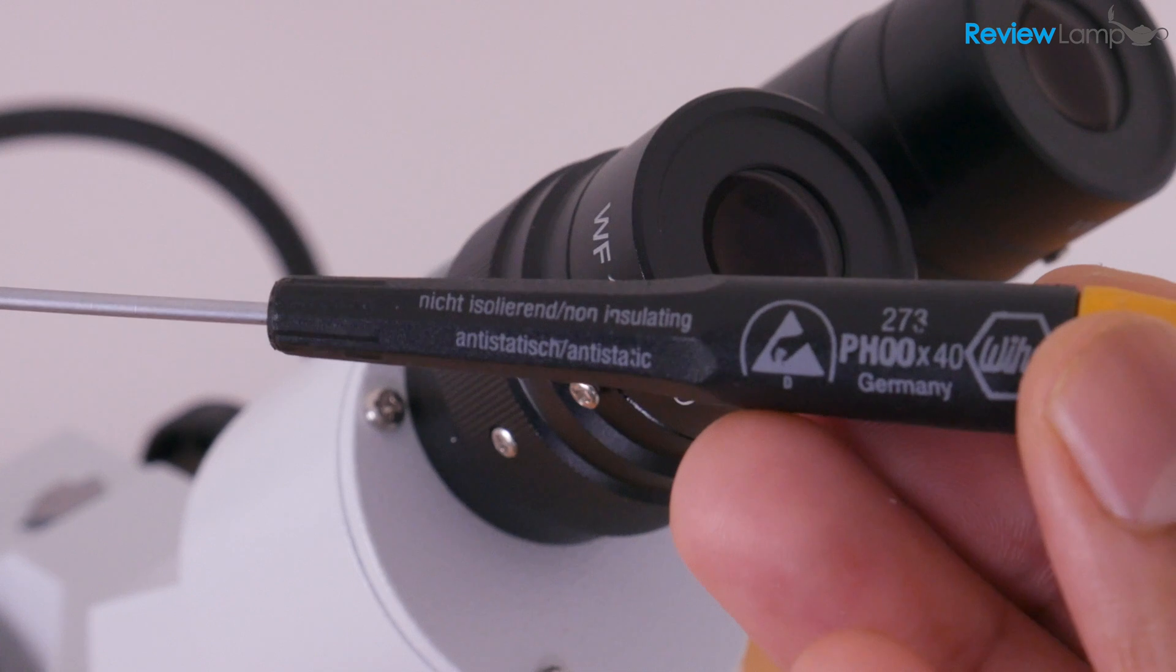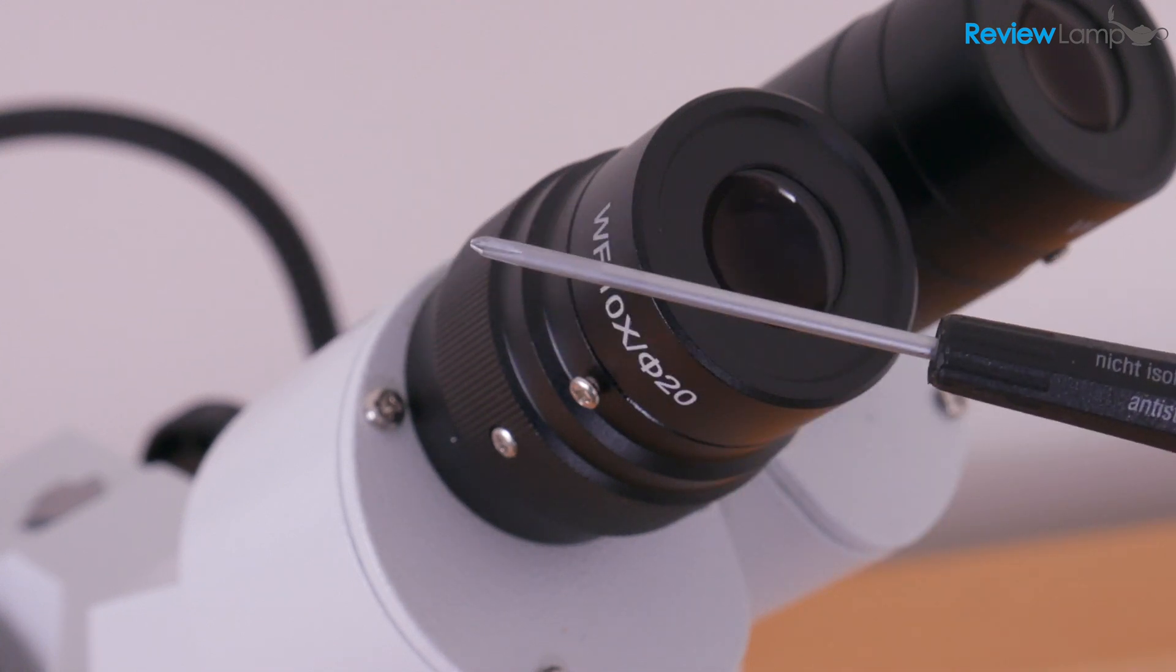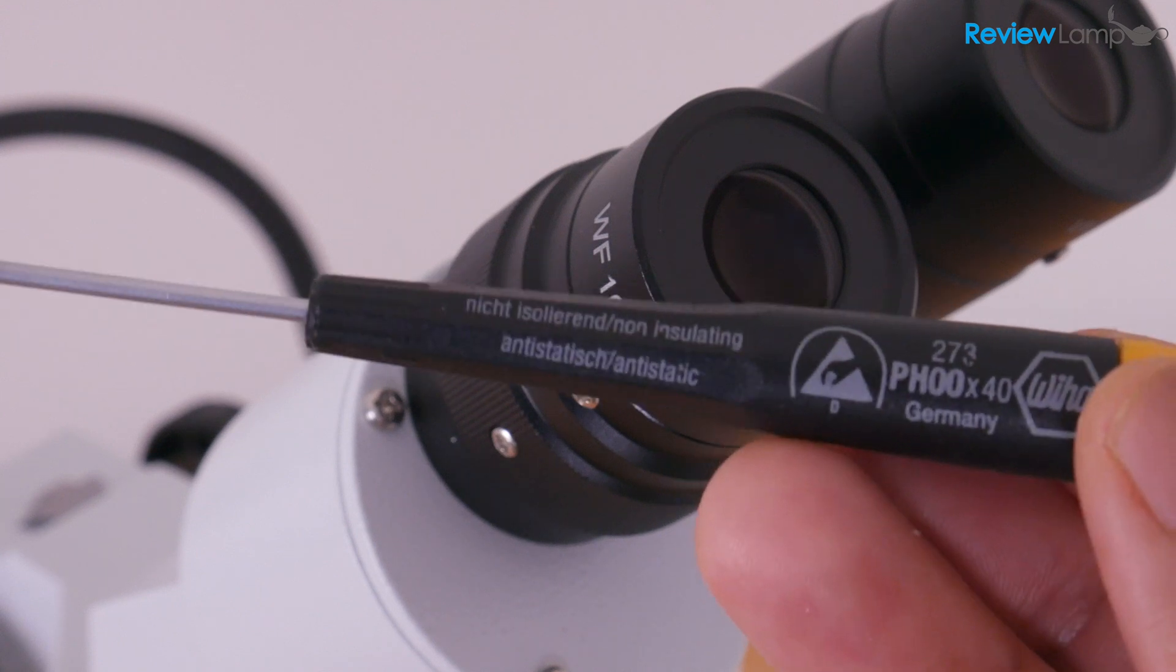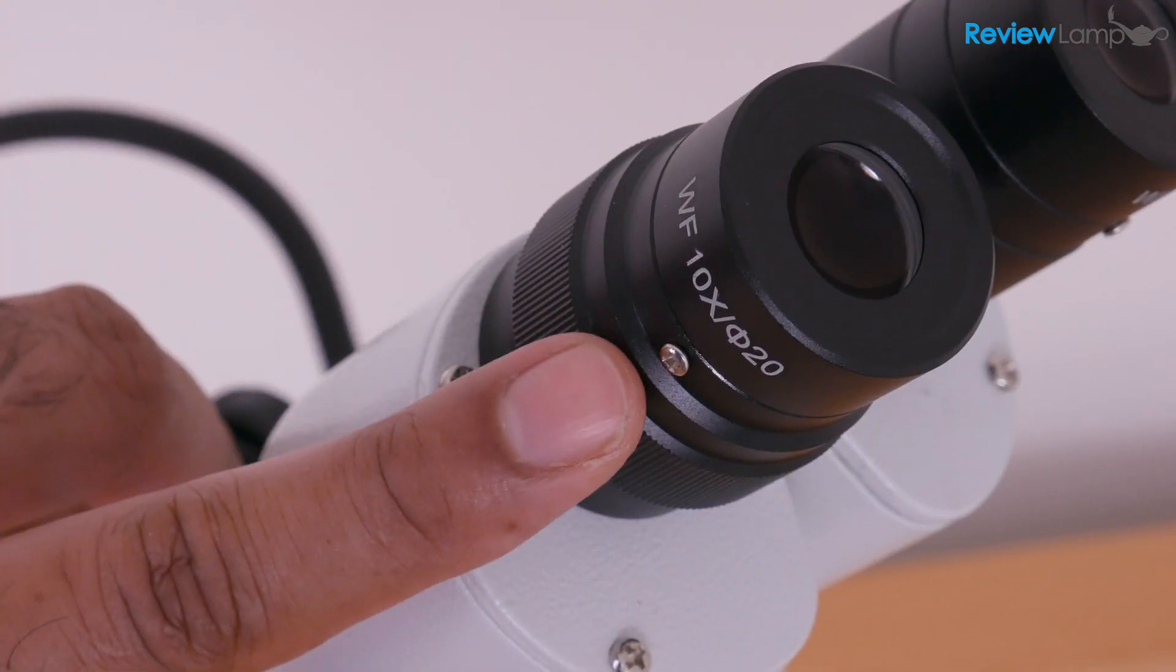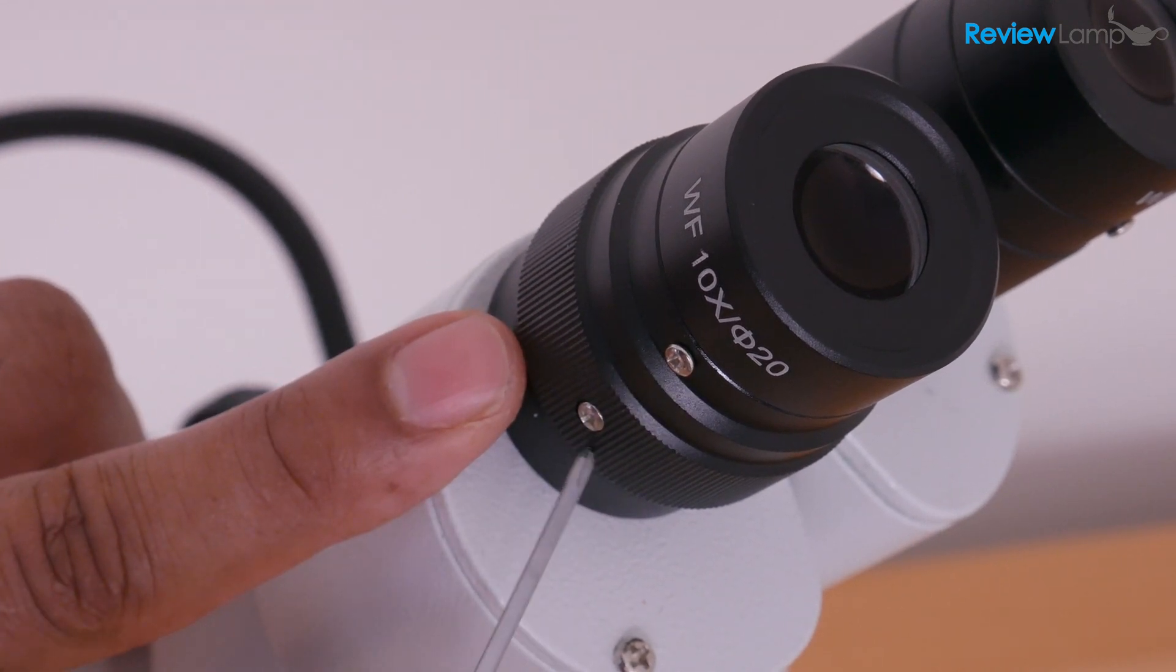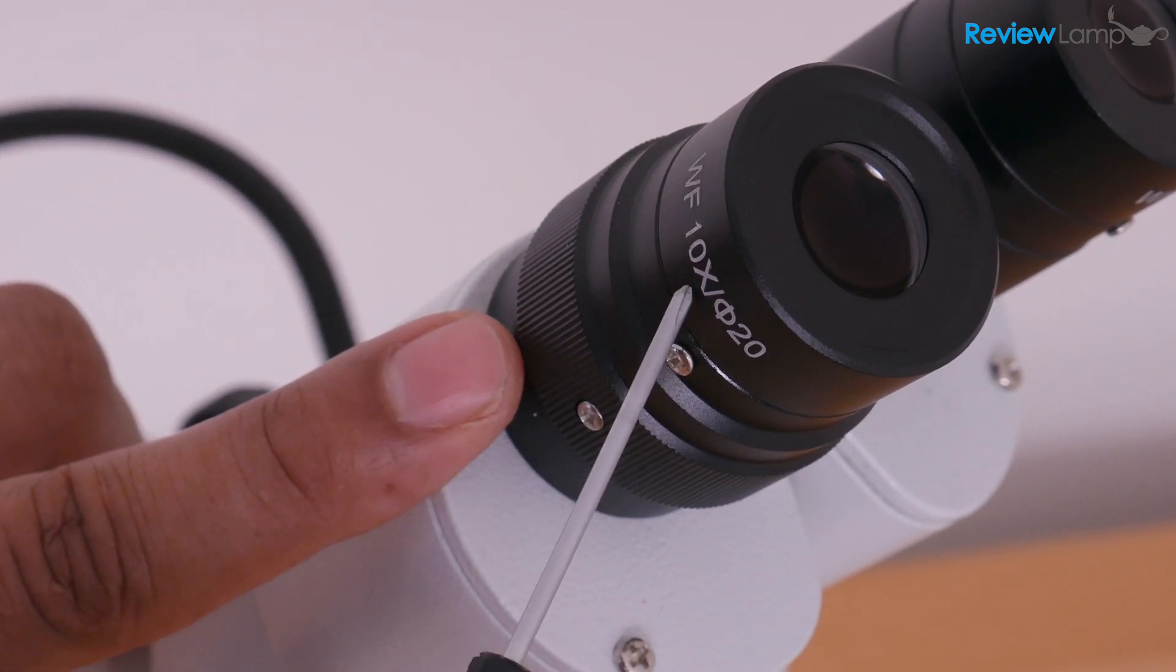And to do this, you're going to need a Phillips head double zero screwdriver. And this is a pretty fine screwdriver. If you don't have one of these, I'll leave a link right below the video. So feel free to check that out. And with that screwdriver, you're going to unscrew the topmost screw, that is the screw that is closest to the eyepiece.